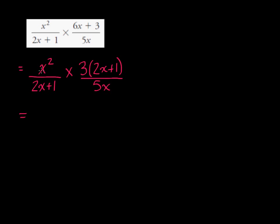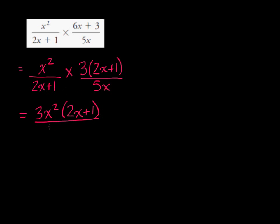So now we multiply numerator times numerator: 3 times x squared is 3x squared, and then that's multiplied by 2x plus 1. And in the denominator, we've got 5x times 2x plus 1.